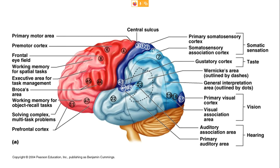Motor areas are primarily concerned with motor functions, carrying action from the brain to the target area. Sensory areas are primarily concerned with sensory functions and receive afferent fibers from thalamic nuclei where major sensory pathways terminate. Association areas are not concerned with primary motor or sensory functions but have associative, integrative, and cognitive functions. Association areas occupy over 75% of the total surface area of the cerebral cortex.